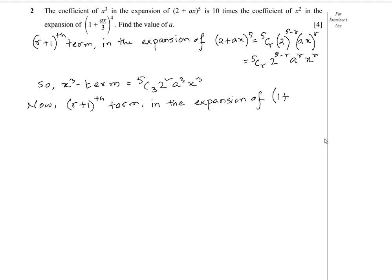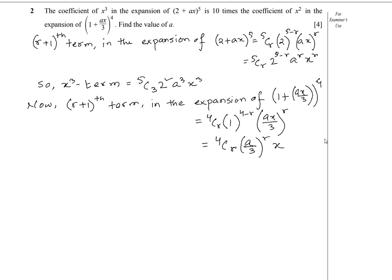Now the (r+1)th term in the expansion of (1 + ax/3)^4 equals 4Cr times 1^(4−r) times (ax/3)^r, which can be written as 4Cr times (a/3)^r times x^r. For the x squared term, the value of r must equal 2.